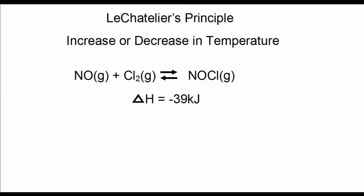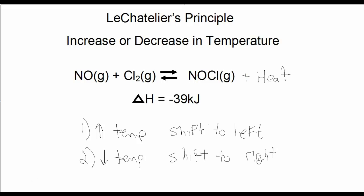Here's another chemical reaction given the delta H. Predict the shift in equilibrium if we increase the temperature and if we decrease the temperature. Pause the video and predict, then check your answer. In this case it's an exothermic reaction, so the heat term goes on the right side of the equation. If we were to increase the temperature, we'd be adding heat to the right side, causing a shift to the left. If we decrease the temperature, we'd be removing heat from the right side, so the reaction would shift to the right.